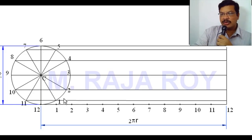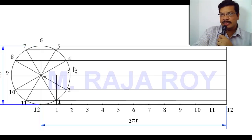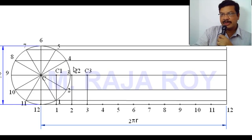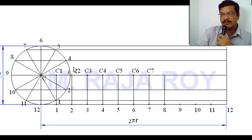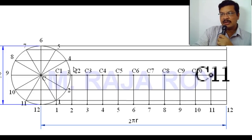After drawing these locus lines, now you have to draw the locus of centers. When point 1 is coinciding with point 1 on this line, the center C is shifted to somewhere here. We will call that point C1. To get C1, draw a projector from point 1 on the straight line. Similarly, to get C2, draw a projector from 2. Repeat this same procedure for C3 through C12: C4, C5, C6, C7, C8, C9, C10, C11, C12.